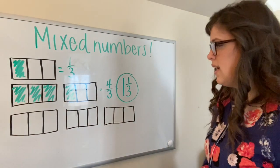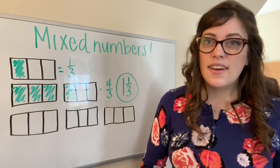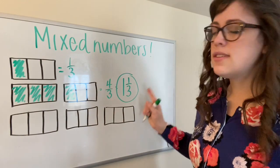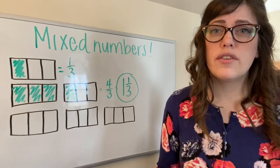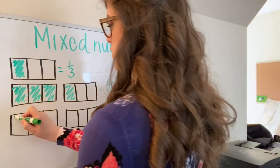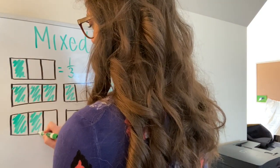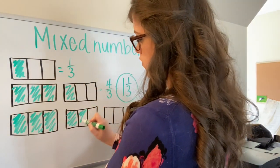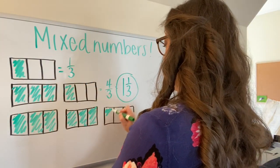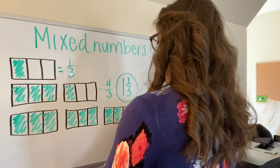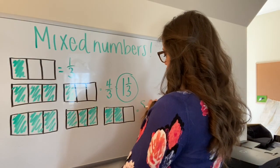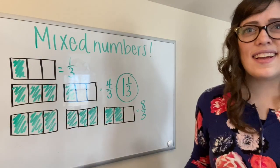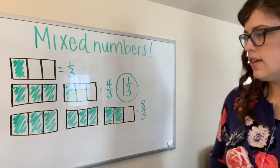This time, I'm going to color in eight thirds. While I color, think about what you think the mixed number will be for eight thirds. All right, eight thirds. There it is. How many did I color in?